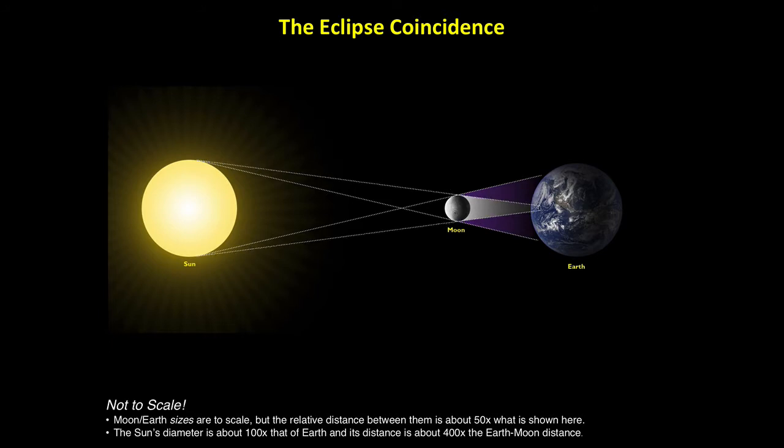Astronomically speaking, the moon's just-right size and distance is an amazing coincidence, because the moon has been gradually moving farther from Earth since the time it first formed. Long ago, when the moon was much closer, it did cover the sun's atmosphere during total eclipses. And by about 600 million years from now, the moon will have moved far enough away that total solar eclipses will no longer occur.